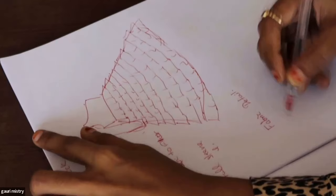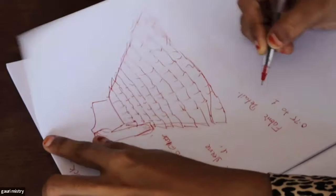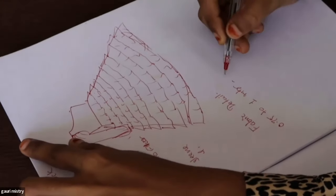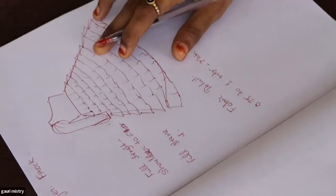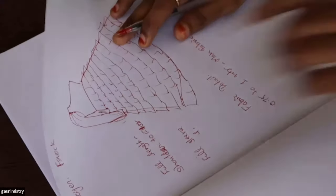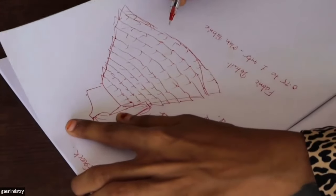0.75 to 1 meter main fabric for body. Kona se 1 meter main fabric hume chahiye bodies ke liye. Top hoga. Kona se 1 meter. And us ke baad.